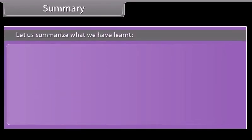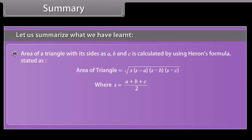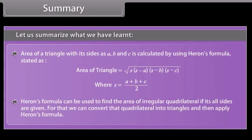Let us summarize what we have learned. The area of a triangle with its sides A, B, and C is calculated using Heron's formula. Heron's formula can also be used to find the area of an irregular quadrilateral if all its sides are given, by converting the quadrilateral into triangles and then applying Heron's formula.